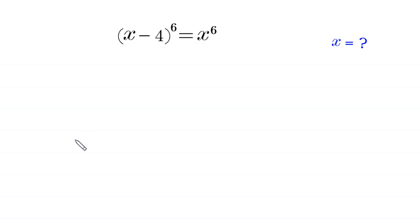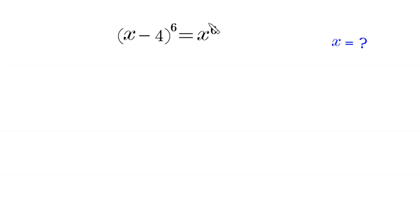Hello everyone, welcome. We are going to solve this very nice algebra equation: (x minus 4) to the power 6 is equal to x to the power 6. We need to find all possible values of x. Let's start by moving x to the power 6 to the left hand side.